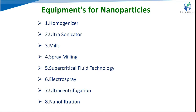Common equipment used for the production of nanoparticles includes high-speed homogenizers, ultrasonicators, milling processes and mills for size reduction, supercritical fluid technology for filtration, and ultracentrifugation for separating nanoparticles from nanosuspensions and nanoemulsions. Nanofiltration is also employed.